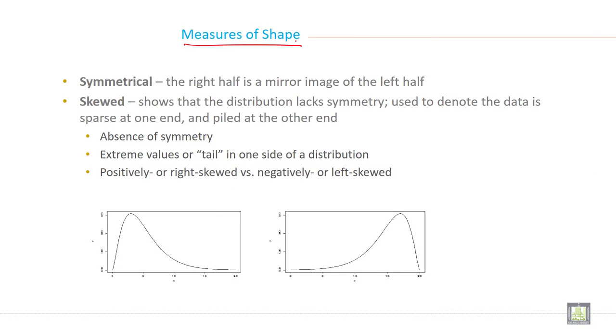Symmetrical: the right half is a mirror image of the left half. Skewed shows that the distribution lacks symmetry, used to denote the data is sparse at one end and piled at the other end. Absence of symmetry. Extreme value or tail in one side of a distribution. Positively or right-skewed versus negatively or left-skewed.